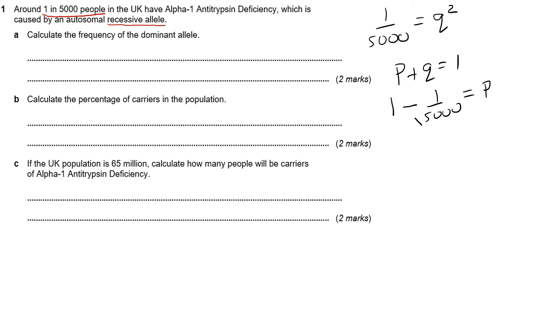Just to be clear, folks, that should be the square root of one over 5,000. Because we've got Q squared, it's the square root of one over 5,000. So one minus the square root of one over 5,000 will give us a value for P.